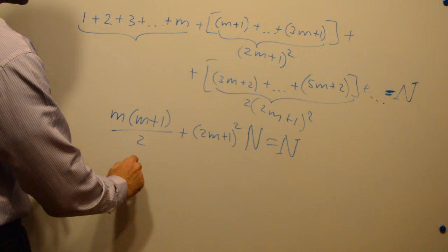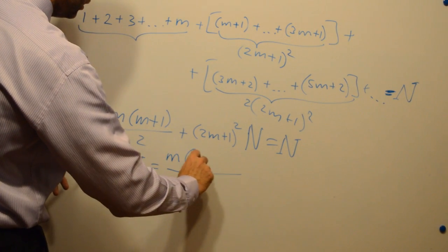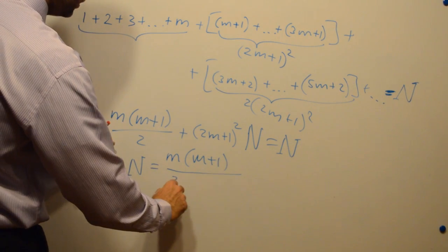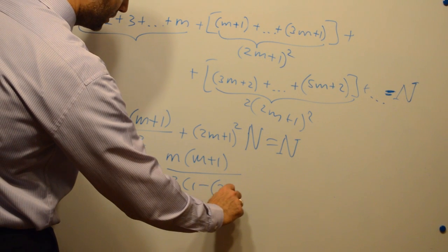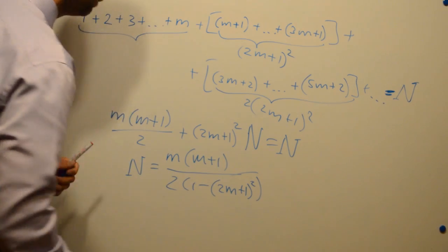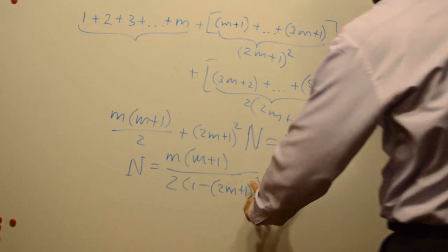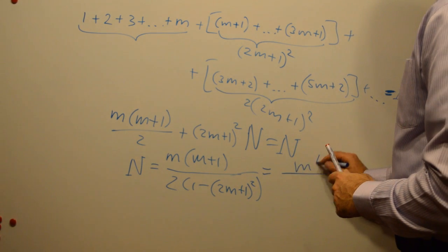And now we can show that n equals m times m plus 1 divided by 2 times 1 minus 2m plus 1 squared. And if we factorize it, we will get this.